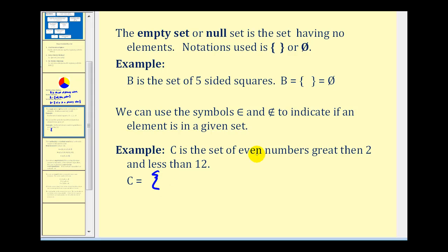So we can't include two because two is not greater than two. So we'd have four, six, eight, ten. And we would also not include twelve because twelve is not less than twelve. So this is our set.